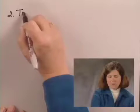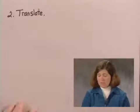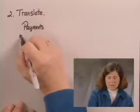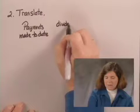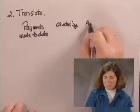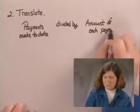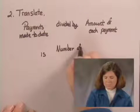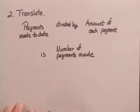The first thing we're going to do is come up with an equation that will help us find M, the number of payments already made. The payments, the amount of payments made to date divided by the amount of each payment, is going to be the number of payments made.